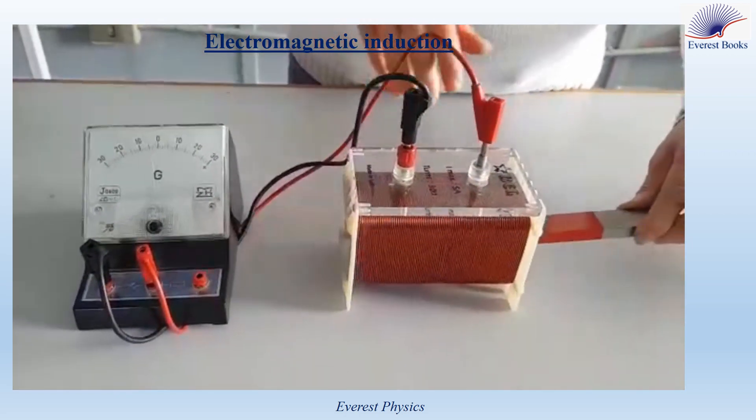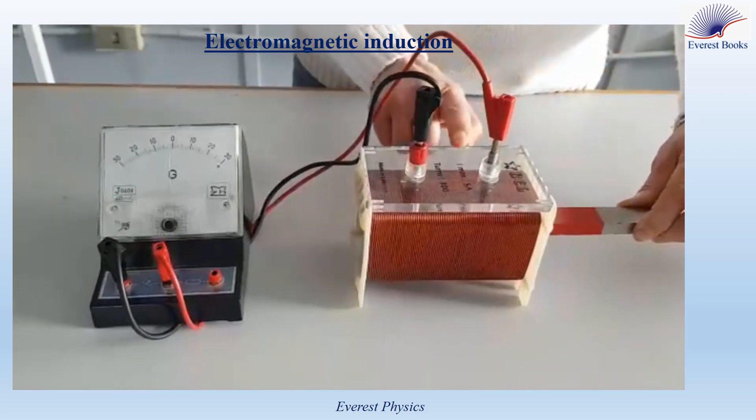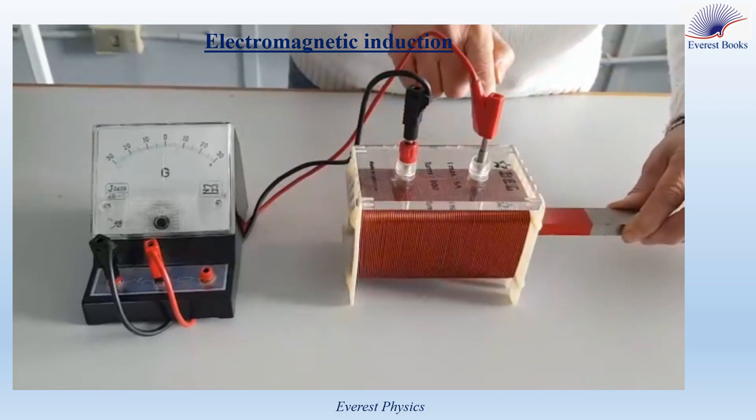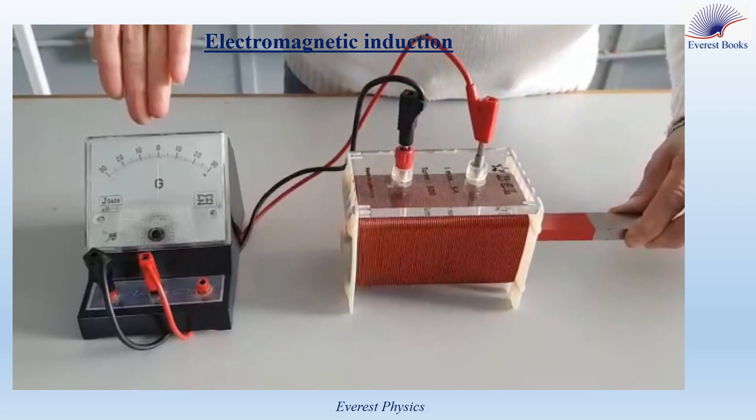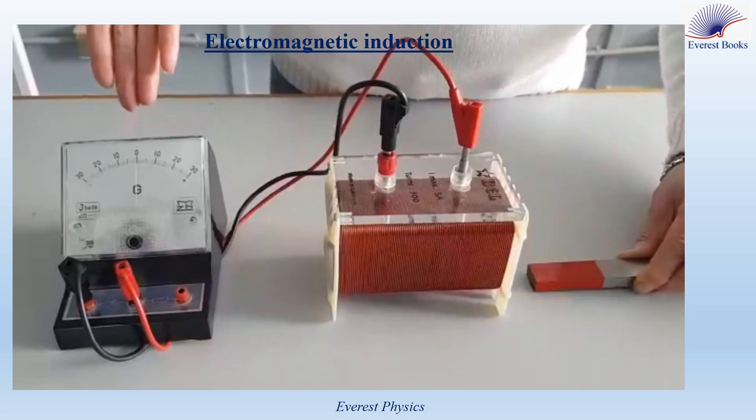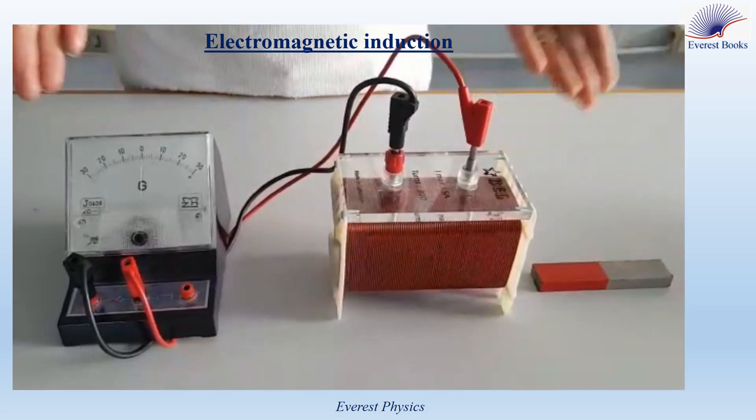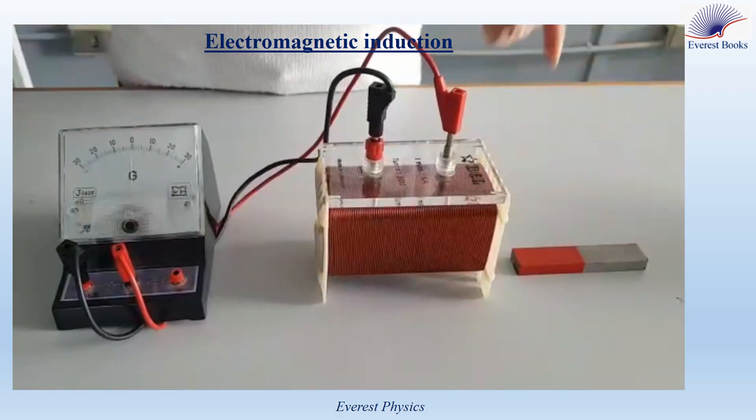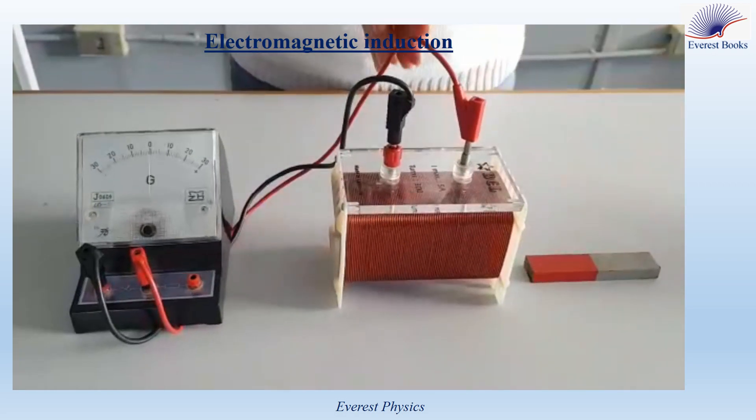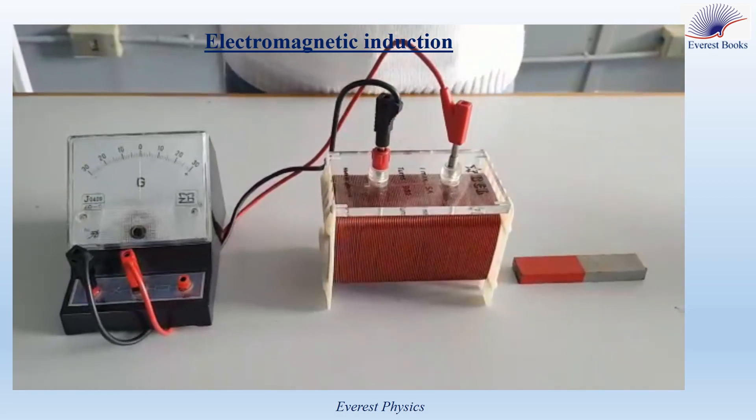Now when both the magnet and the coil are at rest, the needle is not deflected. So a current is induced in the circuit only if the magnet moves relative to the coil or the coil moves relative to the magnet.